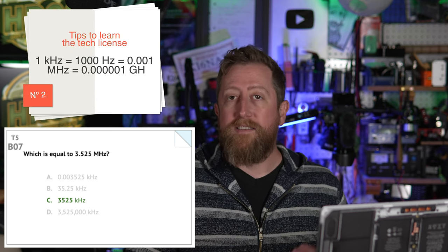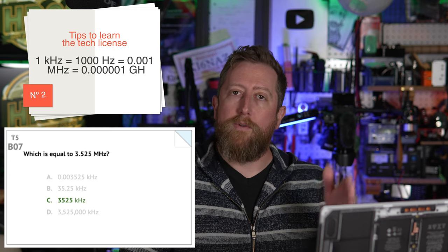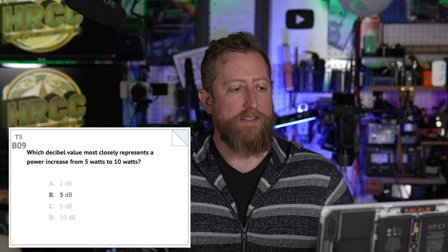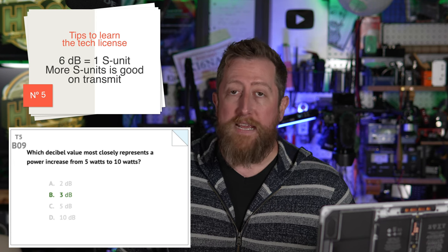You're going to use a lot of that when you start playing around with kits or looking at different components of electronics, but sometimes it also affects your frequency control. Bravo 07: which is equal to 3.525 megahertz? The answer here is C, 3525 kilohertz — playing with the decimal point, moving it three digits over. Bravo 08: which is equal to 1 million picofarads? B, 1 microfarad. Bravo 09: which decibel value most closely represents a power increase from 5 to 10 watts? That is B, 3 dB.